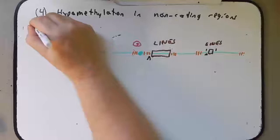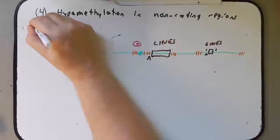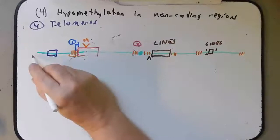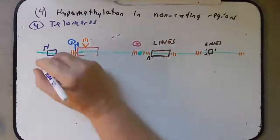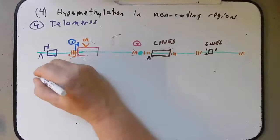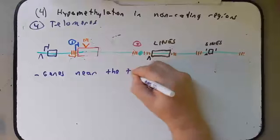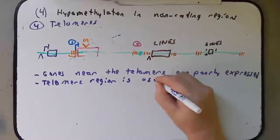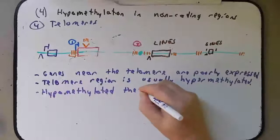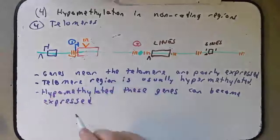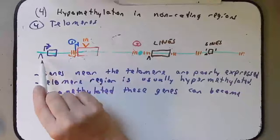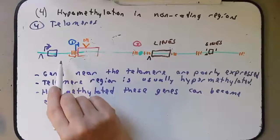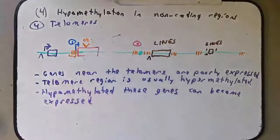Our fourth example has to do with the telomeres. Usually, genes near the telomeres are not expressed, or at the very least are poorly expressed. The telomere region is usually hypermethylated. So if they become hypomethylated, these genes can become expressed. Not only that, but as a gene becomes expressed because it becomes hypomethylated, that can destabilize the heterochromatin material in the region moving forward. So you may actually end up causing the misexpression of several genes towards the telomere, and even as it extends from the telomere.